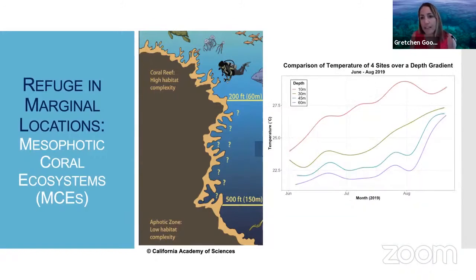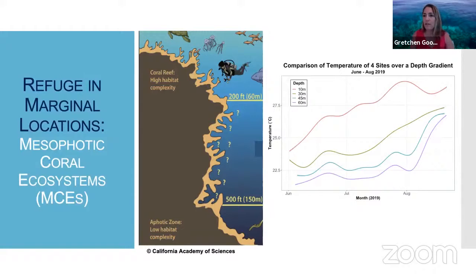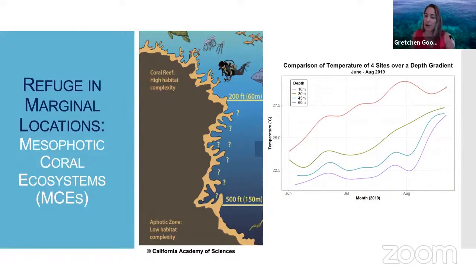Looking at temperature across the depth range in Bermuda, for example, in the peak of summer we can see that reefs at 45 to 60 meters are on average two to three degrees Celsius cooler than reefs at 10 meter depth. This shows that they are indeed buffered from extreme temperature anomalies and generally experience a more stable temperature range on an annual basis.